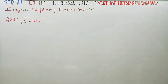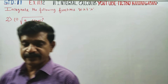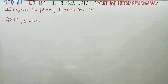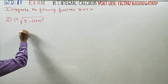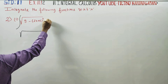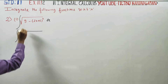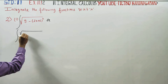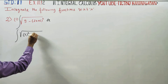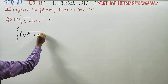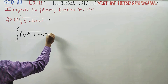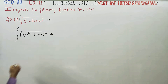Hello 11th standard students, in exercise number 11.12, sum number 2, you have to integrate this. The integration of √9 can be written as √(3² - (2x+5)²) dx. It is a ready-made formula.